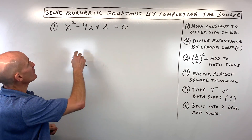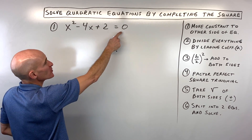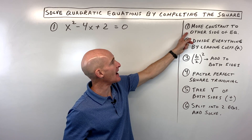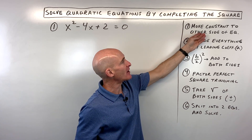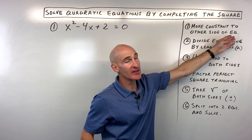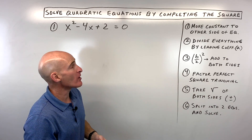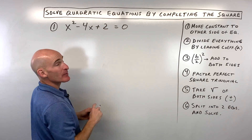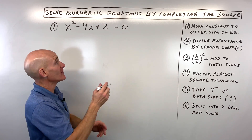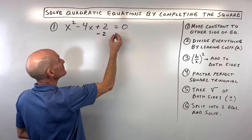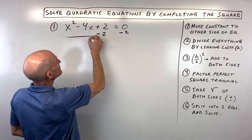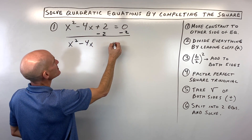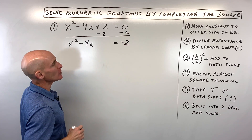The first equation is x squared minus 4x plus 2 equals 0. Following these steps — you might want to take a screenshot or write these down — the first step is moving the constant to the other side of the equation. The constant is just the number, so we subtract 2 from both sides, giving us x squared minus 4x equals negative 2.